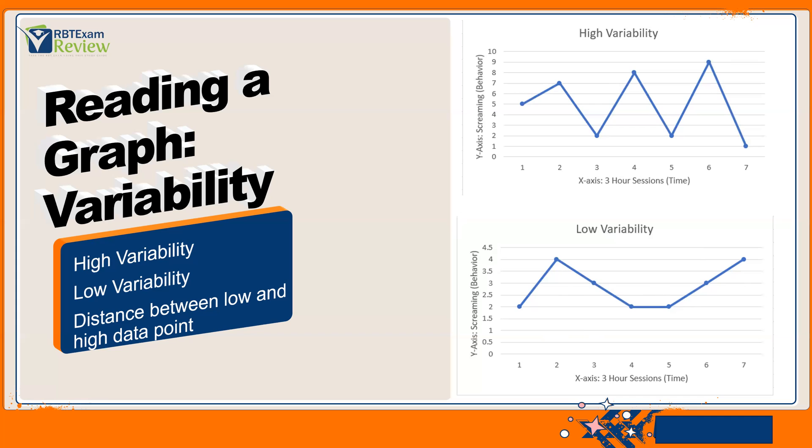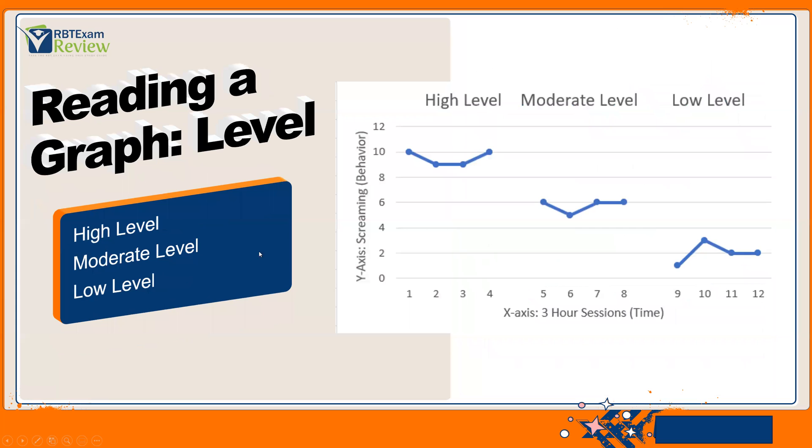So, if you can't tell from just a visual analysis, look at the distance between your low and your high data point. Typically, on the exam, it'll be pretty clear and pretty straightforward. As far as your data path goes, and that's what this line is, your data path. If that data path is jumping all over the place, it's going to be pretty clear. It's high variability. So, keep that in mind. What you're really looking at is the distance between that low and high data point, but typically, you'll be able to tell just through visual analysis.